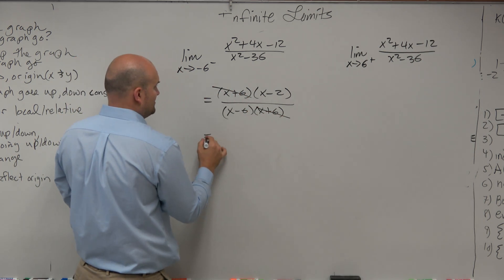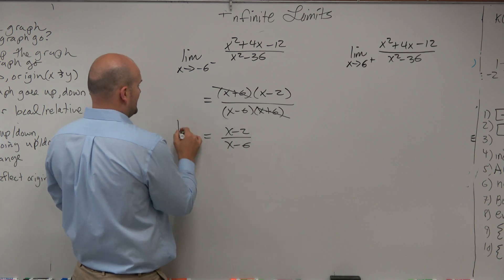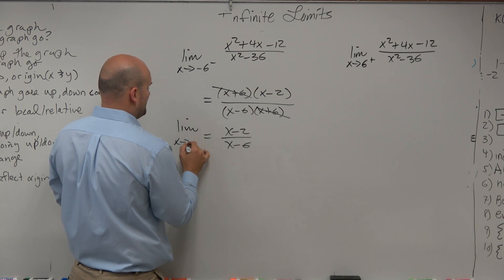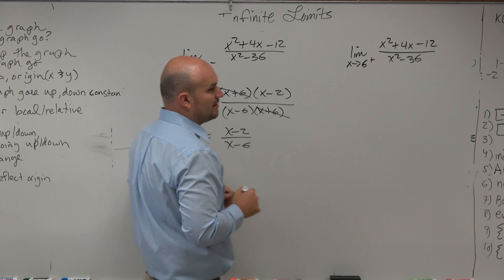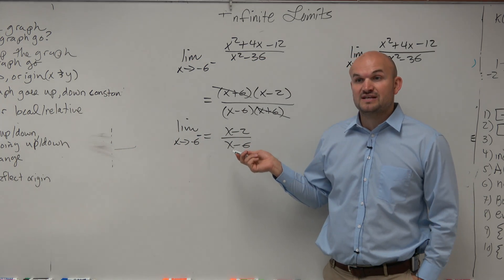Notice, x plus 6 is divide out, x minus 2 over x minus 6. And again, what am I trying to evaluate the limit for? I'm trying to evaluate negative 6 from the left. However, is this function continuous at negative 6?